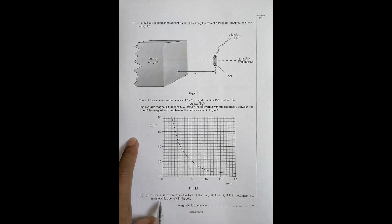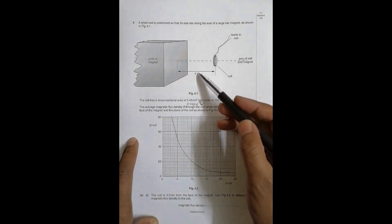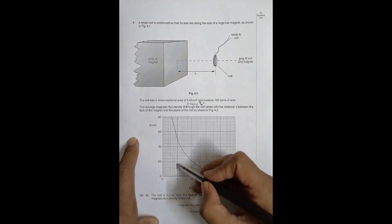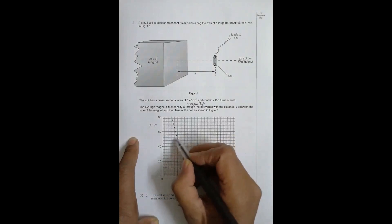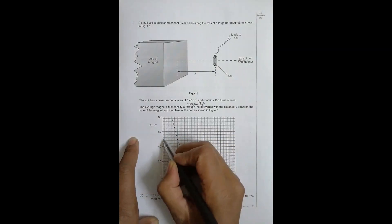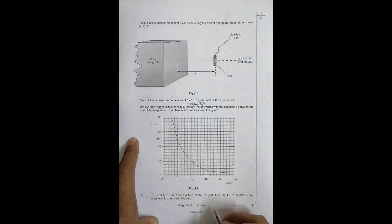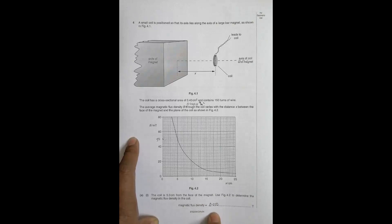Question part (a): The coil is 5.0 cm from the face of the magnet, so this distance x = 5.0 cm. Using figure 4.2 to determine the magnetic flux density at 5 cm, the point on the graph is exactly in the middle of 40 and 60, so it should be 50 mT, which equals 0.050 T.